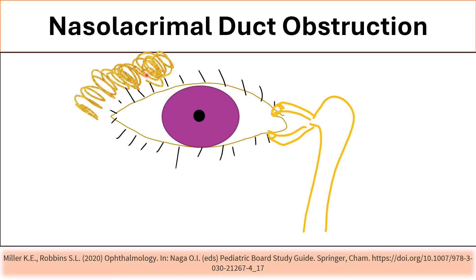This is the lacrimal system. The lacrimal gland produces tears, which travel in front of the eye through blinking and spread all over to provide moisture, preventing dryness of the cornea and conjunctiva. Tears drain from the upper punctum through the upper canaliculi, and from the lower punctum through the lower canaliculi into the lacrimal sac, then down to the nose through the lacrimal duct. Obstruction here causes continuous tearing of the eye.